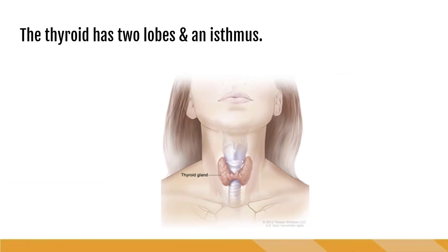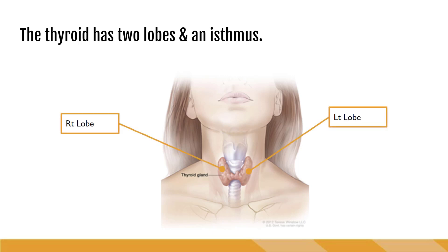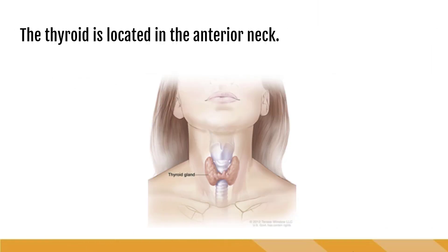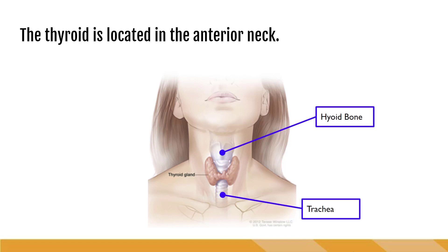The thyroid is made of soft tissue arranged into two lobes: the right lobe and the left lobe. There is a connection across the trachea called the isthmus, which literally means bridge. The thyroid is located in the anterior neck. In this image, we can see that the thyroid sits anterior to the trachea and inferior to the hyoid bone. Behind the thyroid is the thyroid cartilage.